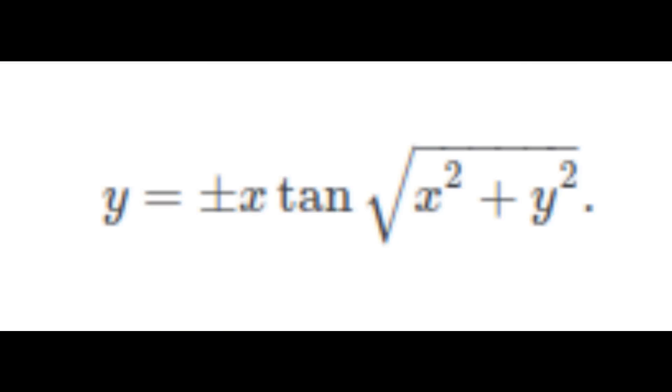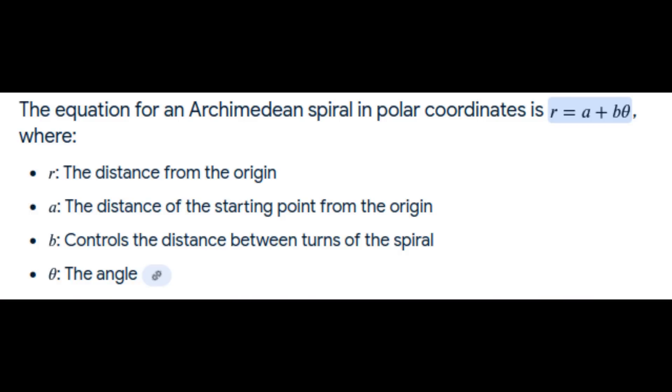We can trick a simple program like TinkerCAD into working in polar coordinates. Because in Cartesian coordinates, if you wanted to design the parametric spiral, the equation is actually pretty tough. In polar coordinates, it's really straightforward. R is the radius of rotation, B is some constant value representing the distance between the arms, and theta is the angle of rotation — a really straightforward thing to implement.